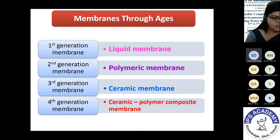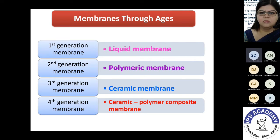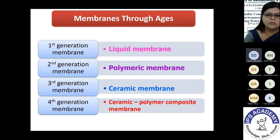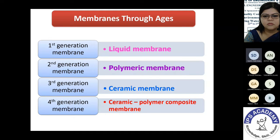Classifying membranes through generations: the first generation was the liquid membrane, the second generation is the polymeric membrane — widely used commercially in a wide range of pore sizes and applied at industrial scale. The third generation is the ceramic membrane, made of inorganic material. Our institute focuses on ceramic membrane research. These membranes are growingly increasing in use because of their multifaceted features. The fourth generation is the ceramic-polymer composite membrane, which we are also developing in our laboratory.